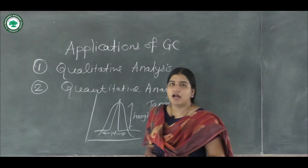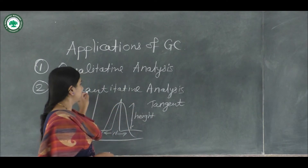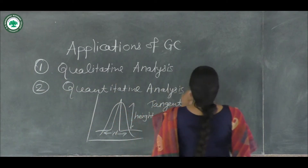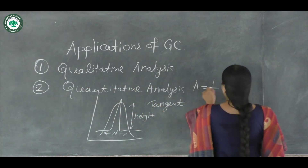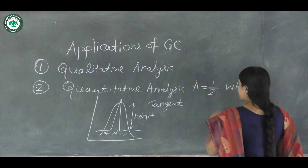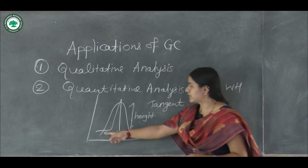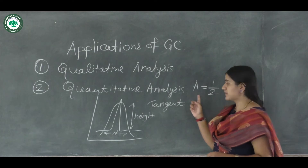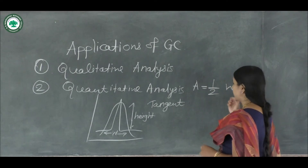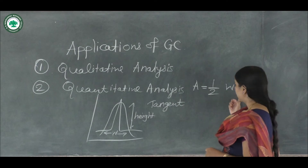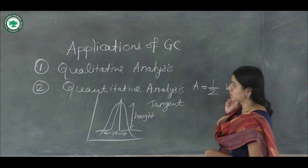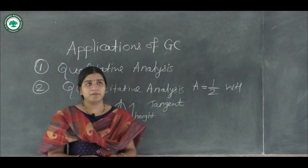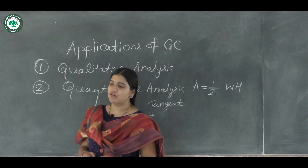For quantitative analysis using full width half maxima, the area A is equal to half W into H, where A is the area under the chromatogram, W is the width, and H is the height of the chromatogram. Gas chromatography is used on a wide basis in both quantitative and qualitative analysis.